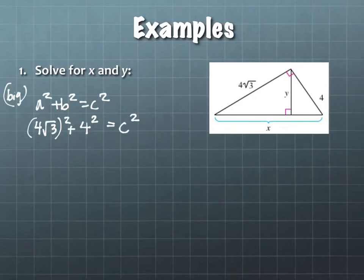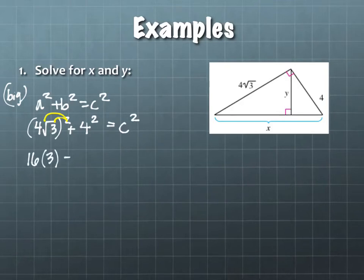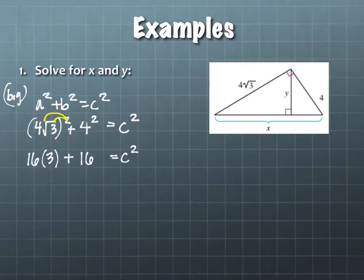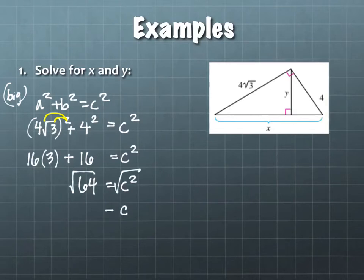One thing to keep in mind: when we square the 4 square root of 3, we have to square both the 4 and the square root of 3 — that's a property of exponents. So we have 4 squared is 16, and square root of 3 squared is 3, plus another 16 equals C squared. If I add the left-hand side together, I get 64. So by taking the square root, C equals 8.